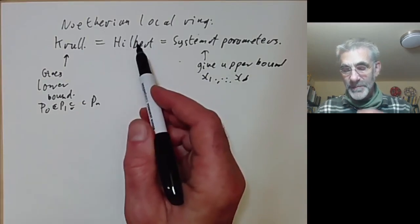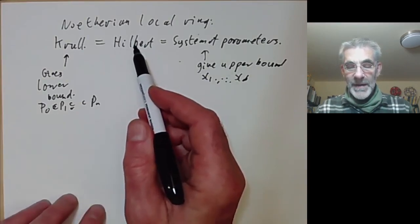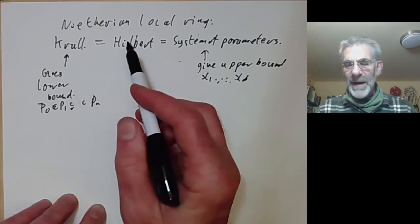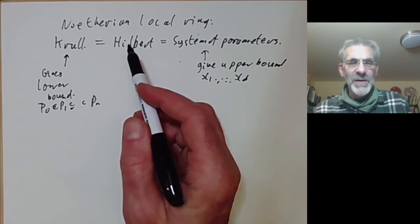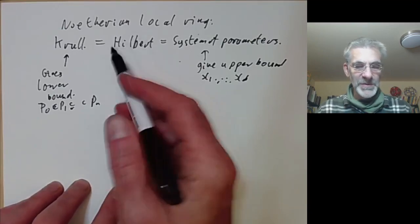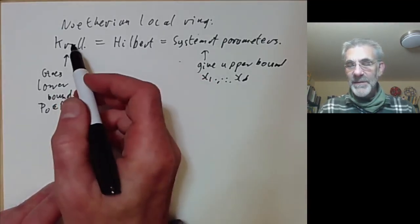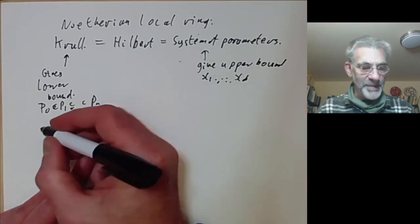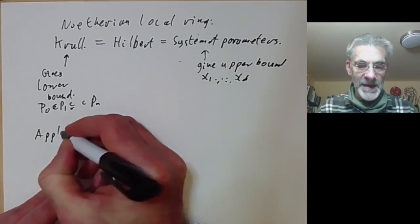Hilbert's definition gives both an upper bound and a lower bound, but it requires a certain amount of work because you have to figure out what the Hilbert polynomial is. So it requires a bit of effort. Anyway, we're going to give a few applications of this, and the first application is very easy.